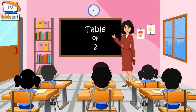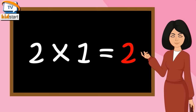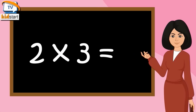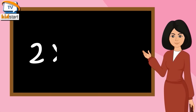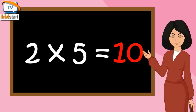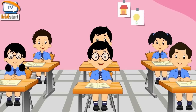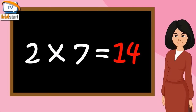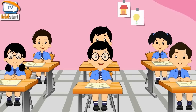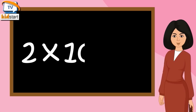Table of Two. Two-sixes are twelve. Two-sevenths are fourteen. Two-eighths are sixteen. Two-nines are eighteen. Two-tens are twenty.